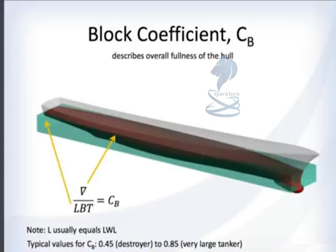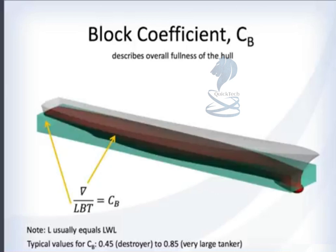The block coefficient (Cb) is a very important number for comparing ships. It describes the overall fullness of the hull: it's the underwater volume divided by length times beam times draft — how much volume the ship actually takes up compared to the maximum possible. The length used is usually the length on the water line. A destroyer, focused on speed, has a finer hull and a lower Cb; a large tanker, focused on cargo, has a much fuller hull and a higher Cb. This single number lets you compare even very complex and differently shaped hulls.